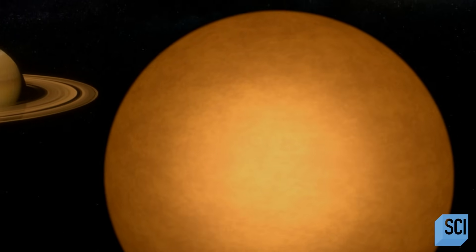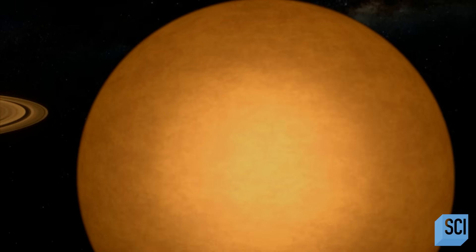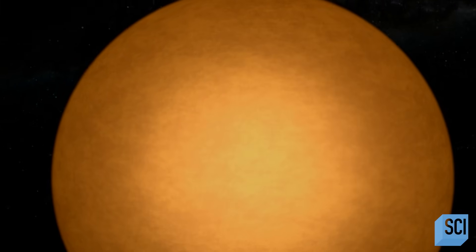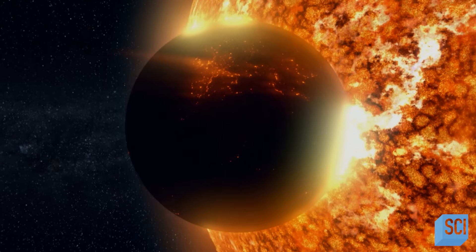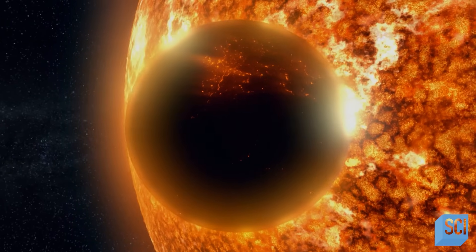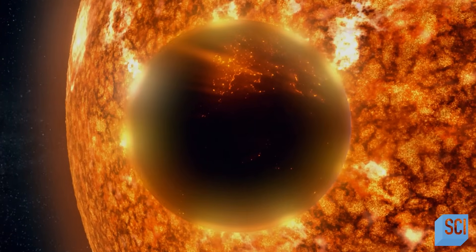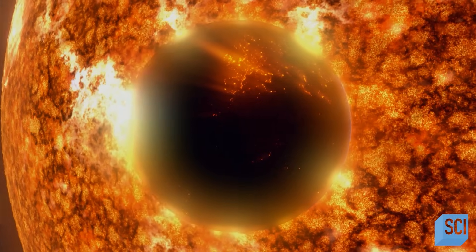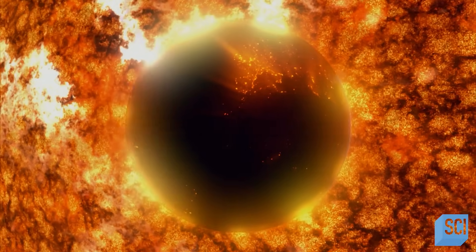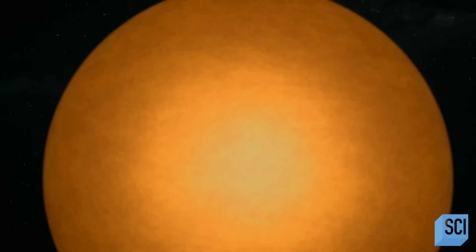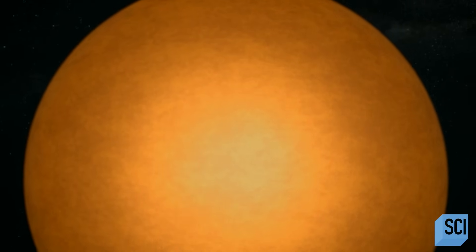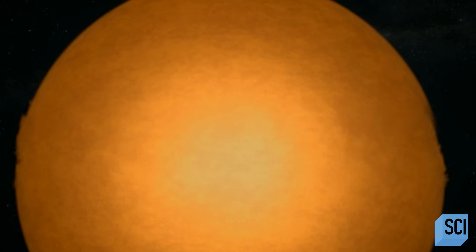And one day, it could become the most habitable place in our solar system. In five billion years, our sun will expand into a red giant and incinerate Earth. But Titan will get less UV radiation from the dying sun.